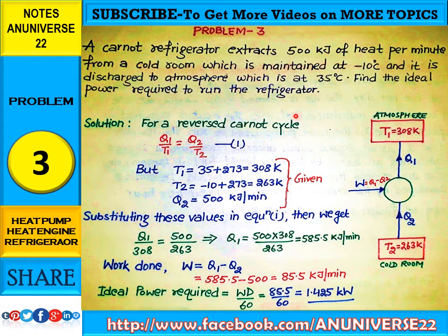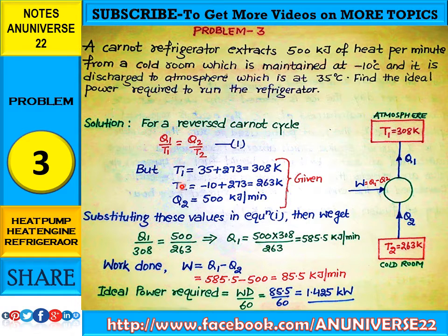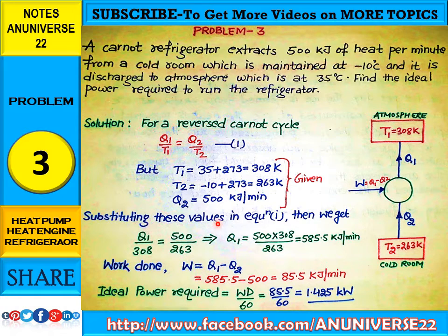From the reverse Carnot cycle, the equation is: Q1 upon T1 equals Q2 upon T2 — this is equation 1. T1, T2, and Q2 are the values given in the statement. By substituting these three values in equation 1, we can find Q1. Substituting the values gives: Q1 upon 308 equals 500 upon 263.